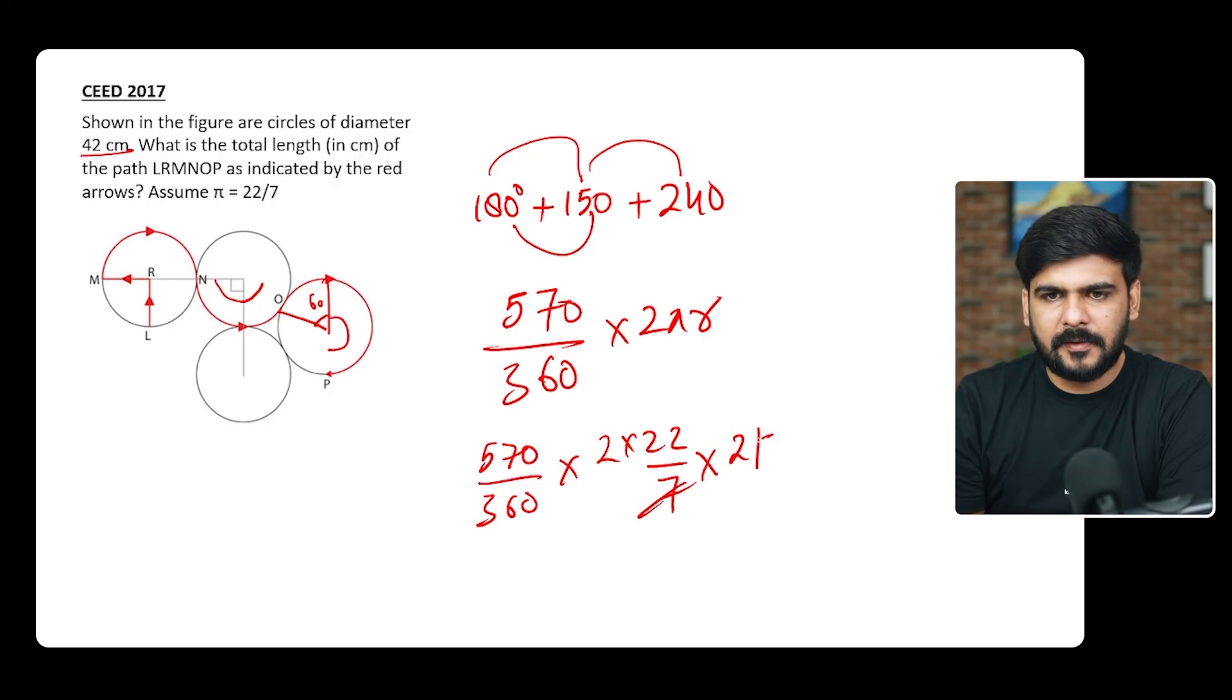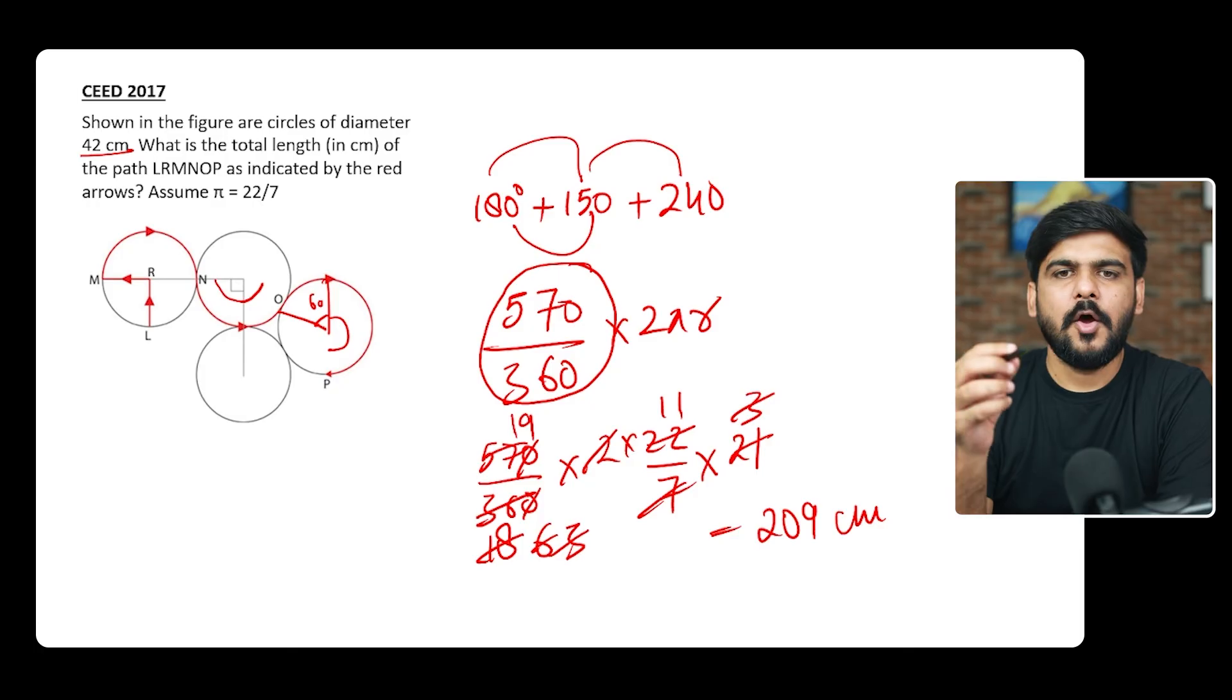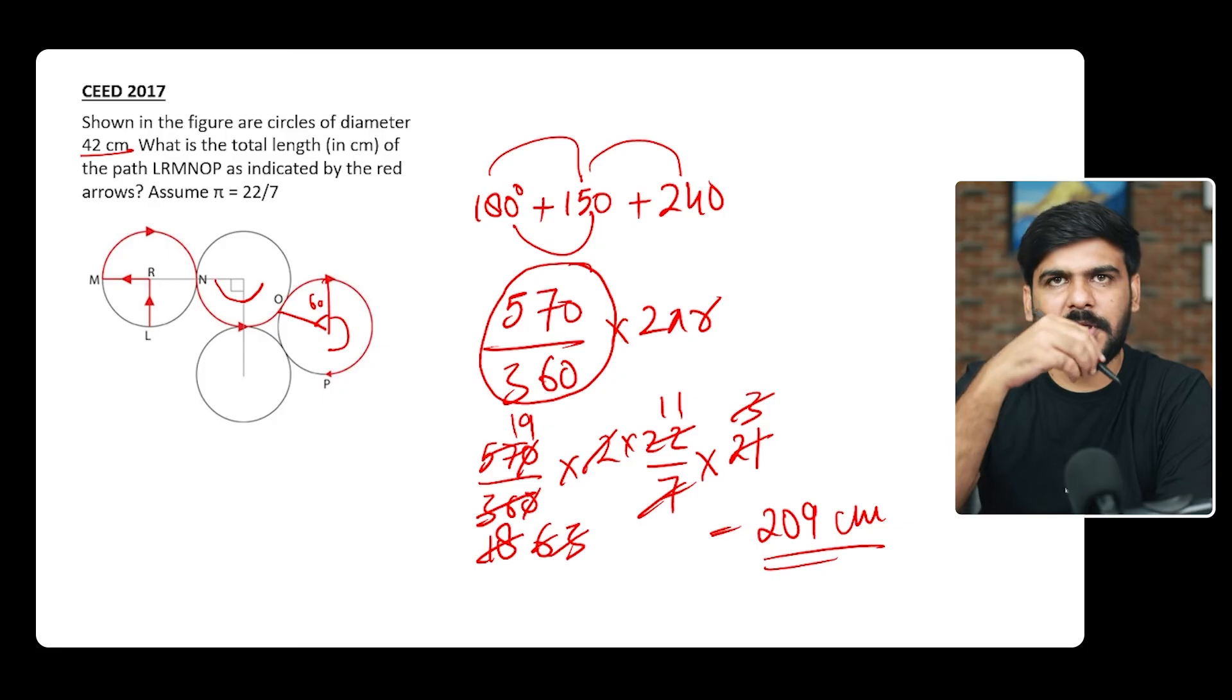We can divide it by 3, and this 0 will cancel this 0. This will divide by 18. Then let us further divide it: this 3 will divide by 6. Then let us do further: this would be 3, this would be 11, and this would be 19. So by this method, we can get 19 × 11, that is 209 centimeters.